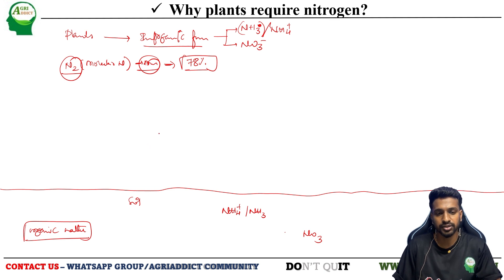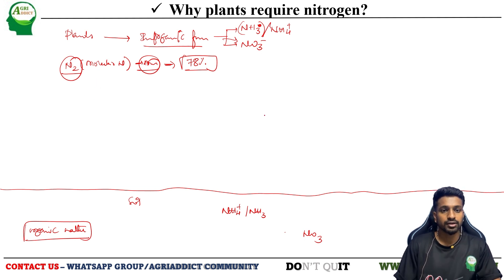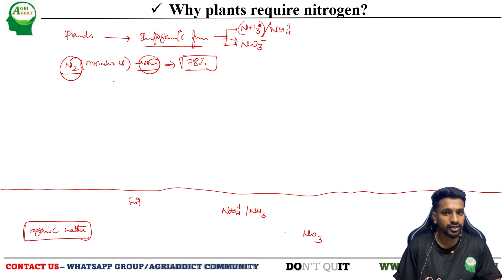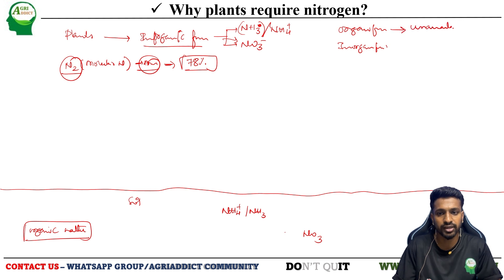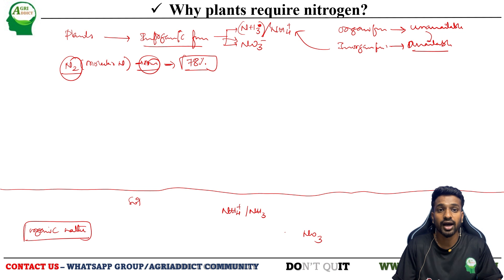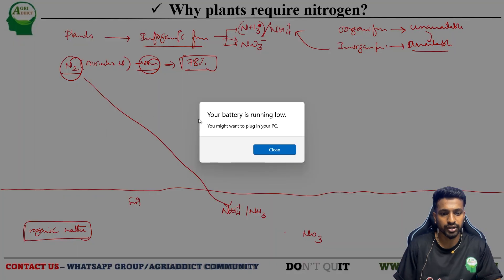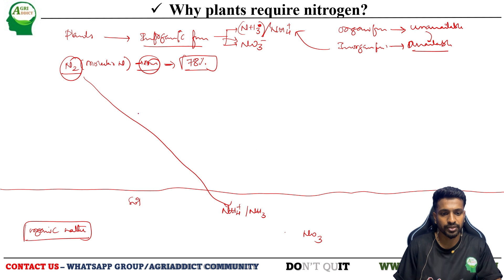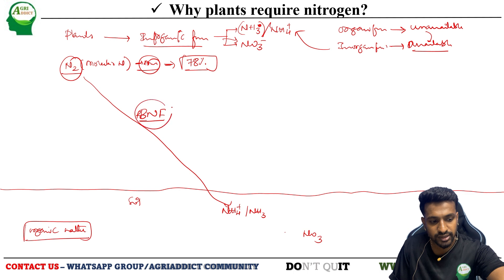Plants can absorb nitrogen only in the inorganic form. Nitrogen fixation must occur before plants take up nitrogen — converting from the unavailable form to the available form. Of the two broadly classified forms, the organic form is unavailable and the inorganic form is available. So the first step is conversion of molecular nitrogen into ammonia. This process — the conversion of molecular nitrogen to ammonia by biological organisms — is called biological nitrogen fixation.